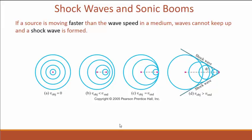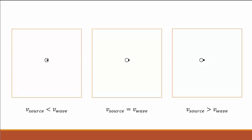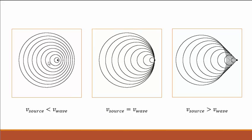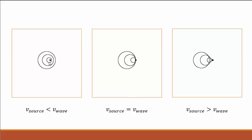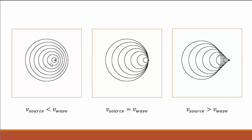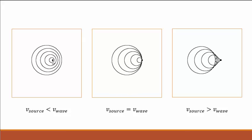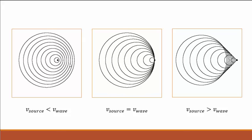And they make some cool pictures and whatnot, too. So let's look at this idea one more time, but now animated. So here, the source of the waves, whether it's a sound wave or otherwise, is moving slower than the wave propagation. And so you get this Doppler effect.